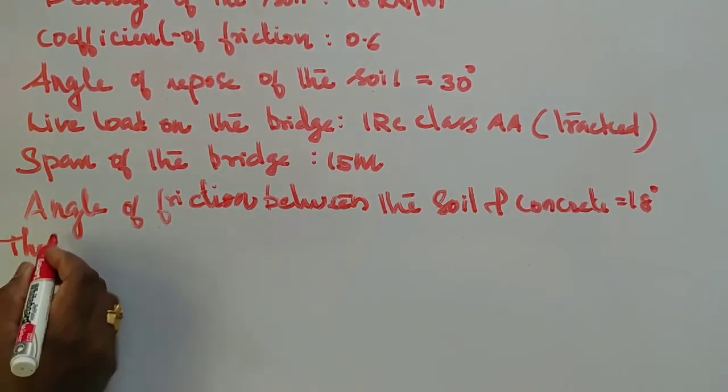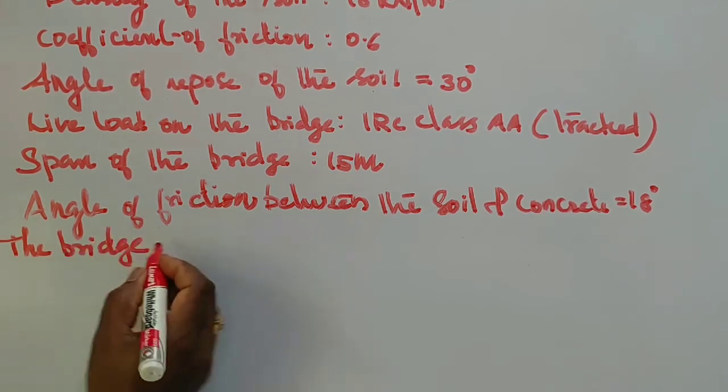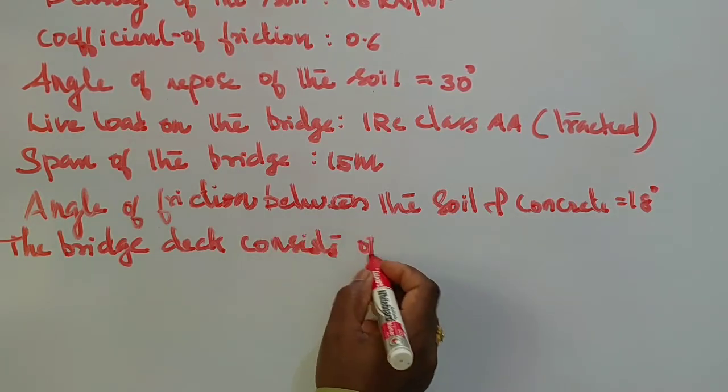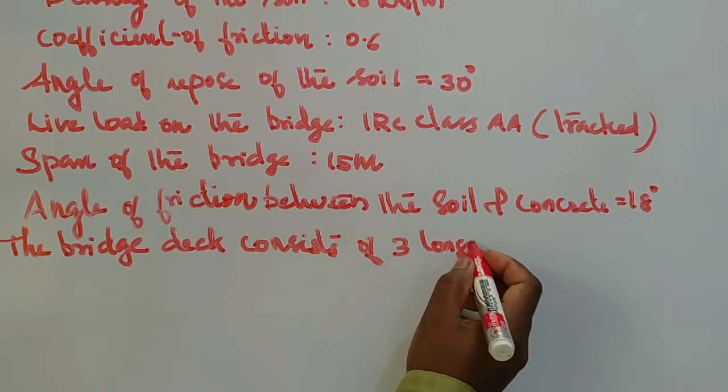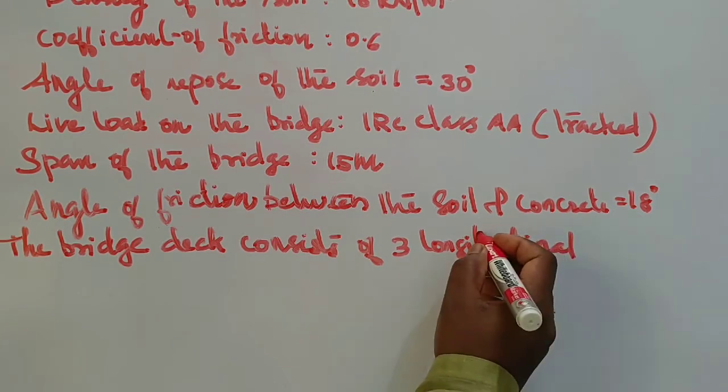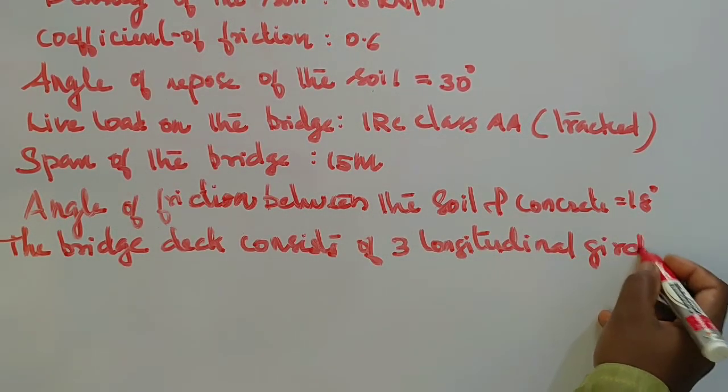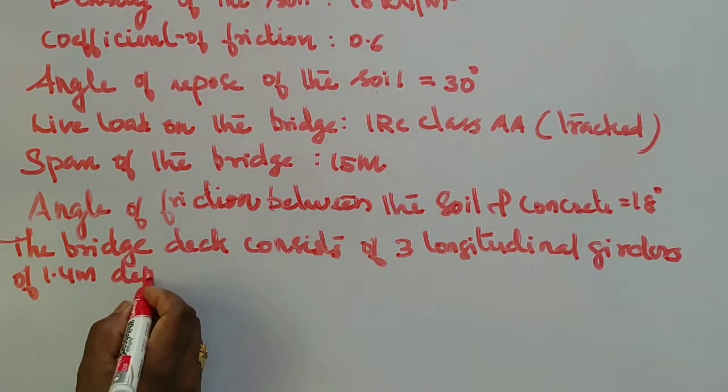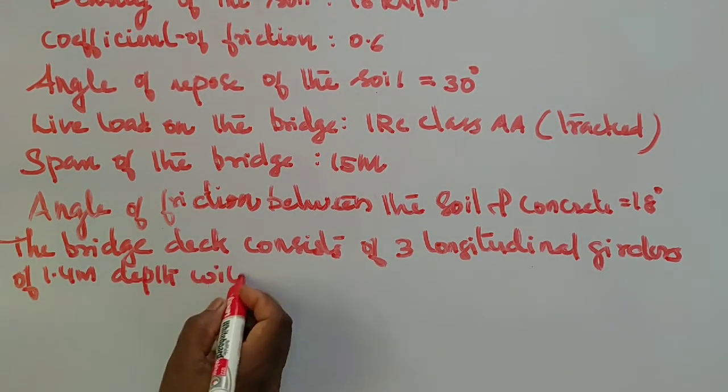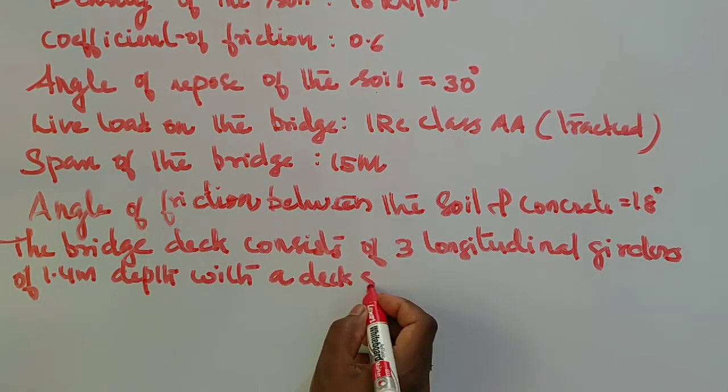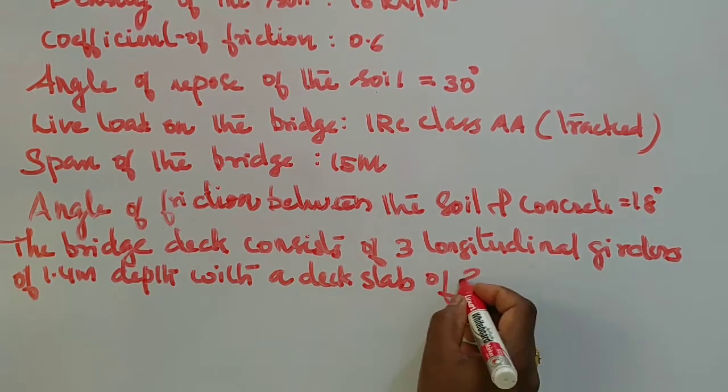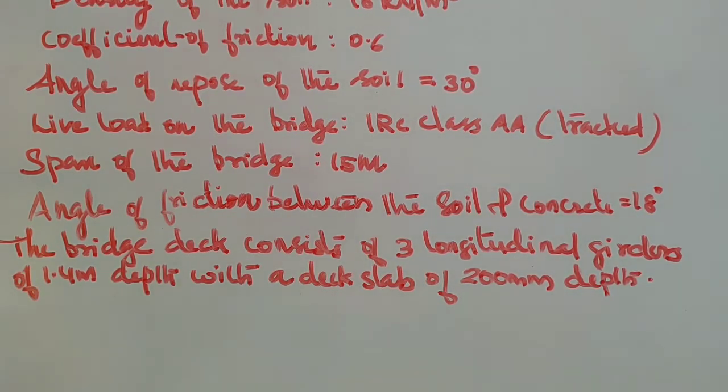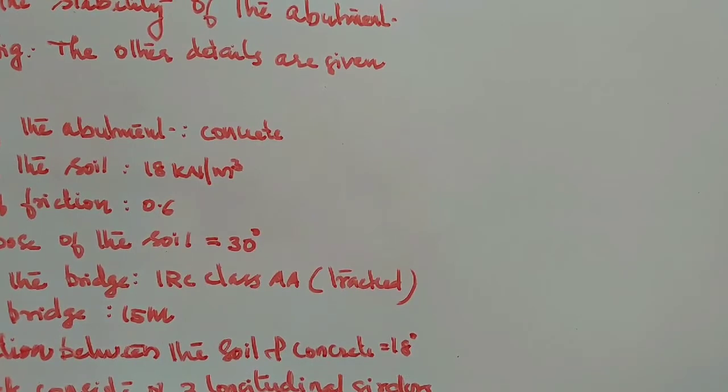The bridge consists of three longitudinal girders, 1.4 meter, with a deck slab of 200 mm depth. Details of the figure: